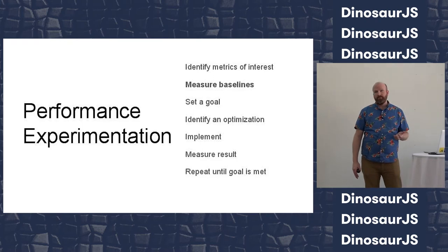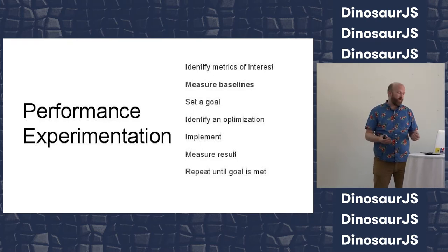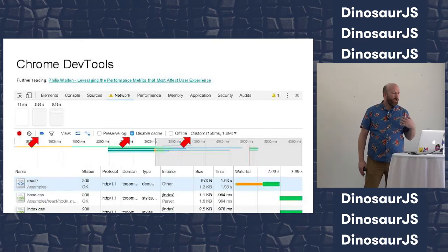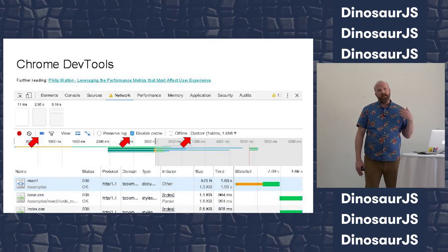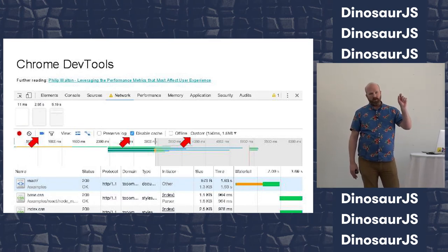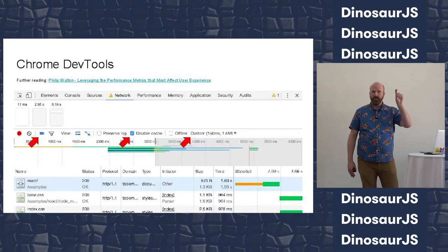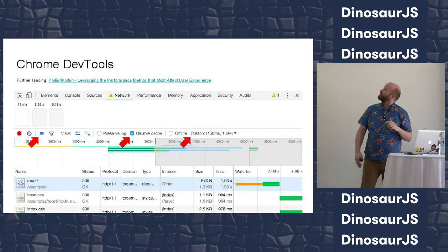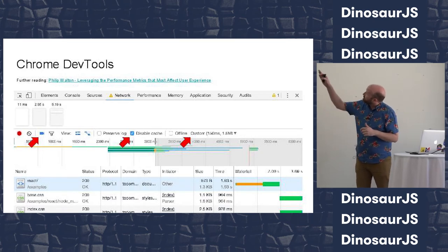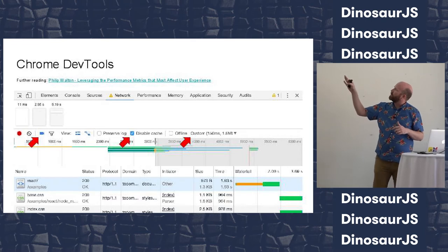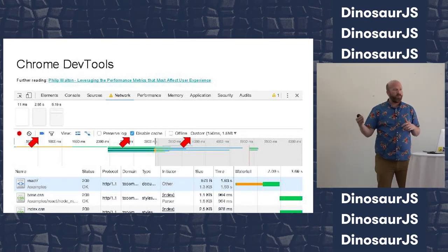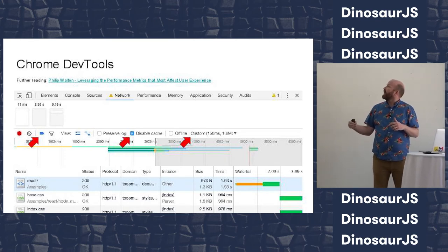The next thing is measuring baselines. In Chrome's DevTools on the Network tab, there's a camera icon. If you click it and reload the page, Chrome captures what they call a film strip — every time a paint occurs, they take a small thumbnail screenshot with the time next to it. You can see when different paint events happened. In this example, the first paint was at 2.95 seconds and visually complete at 5.19 seconds.